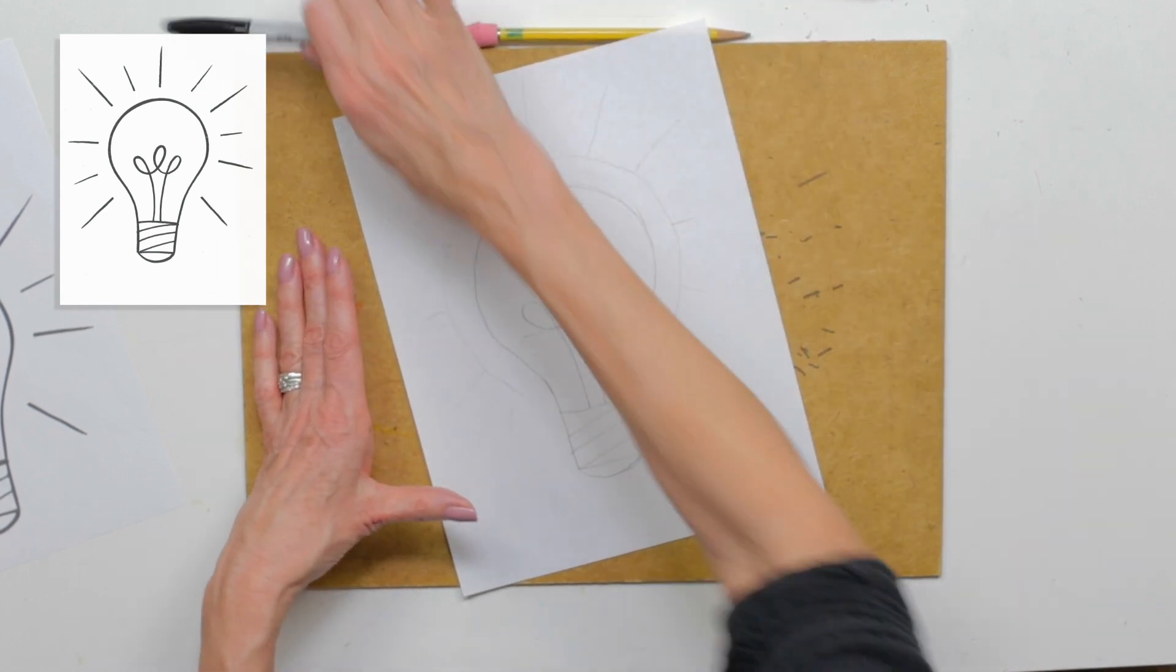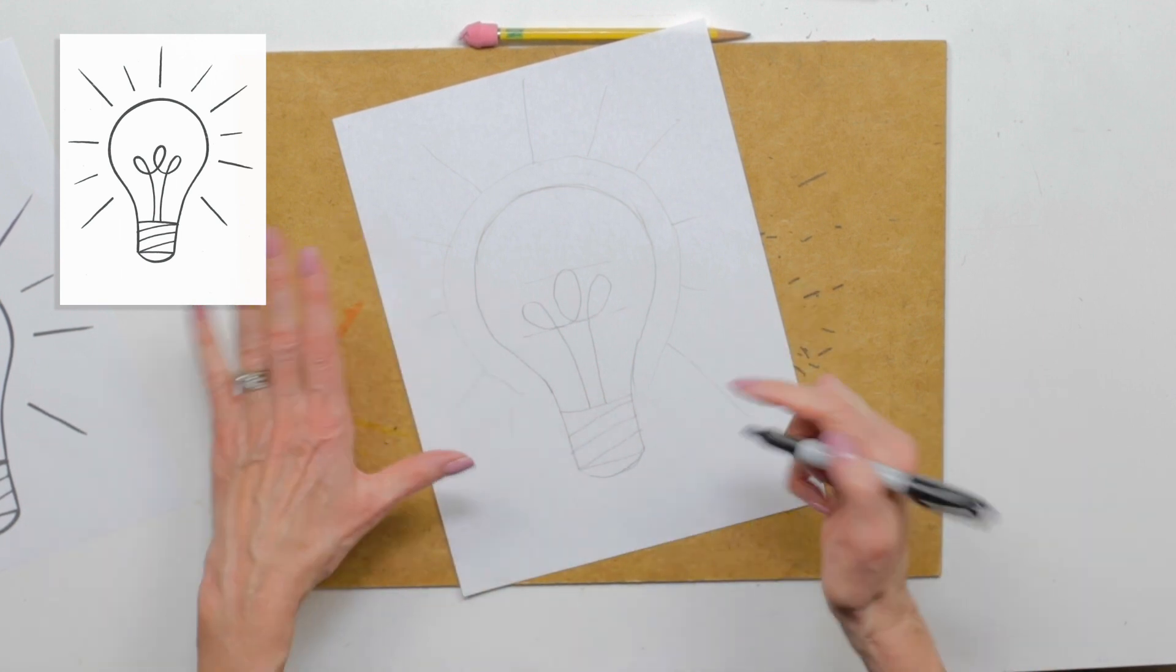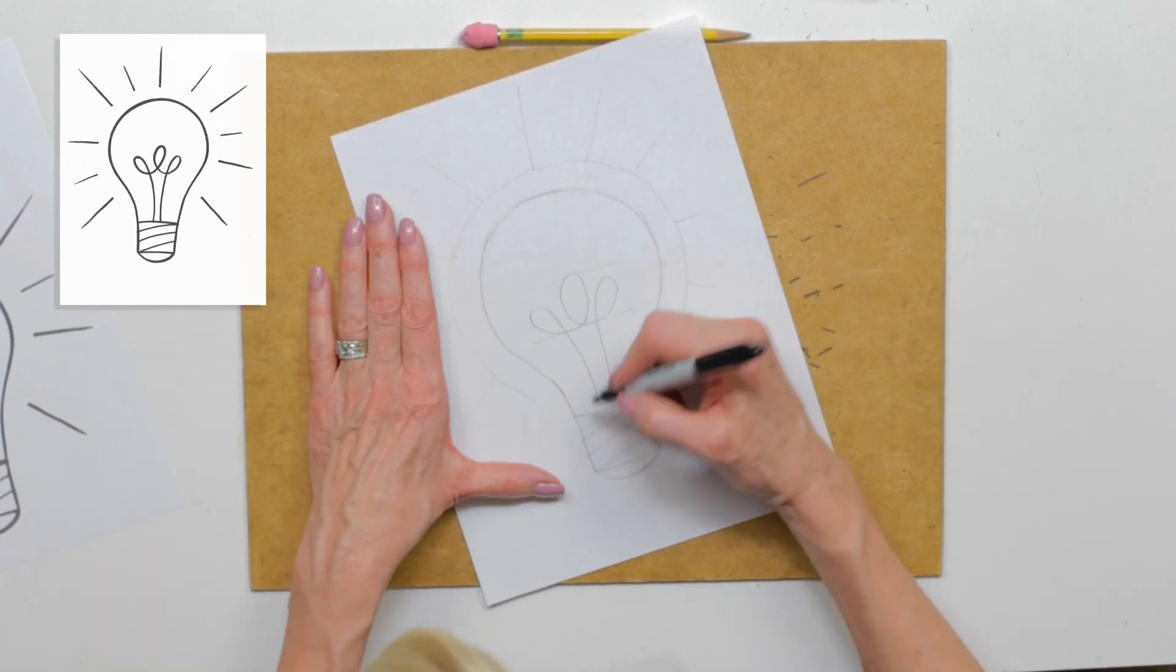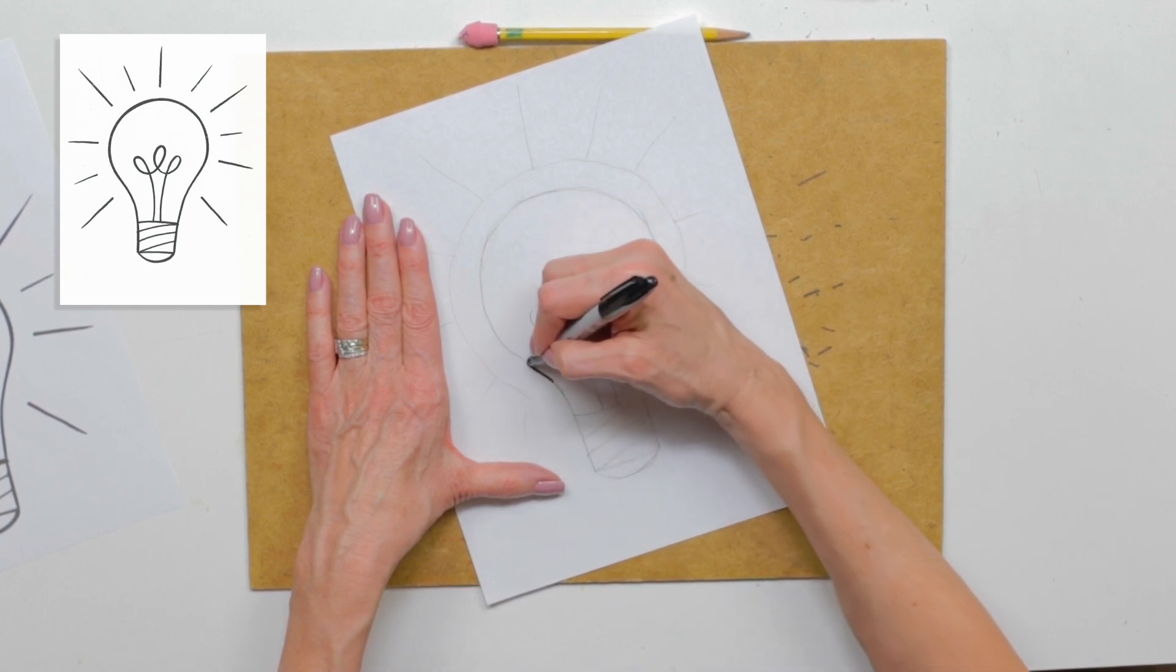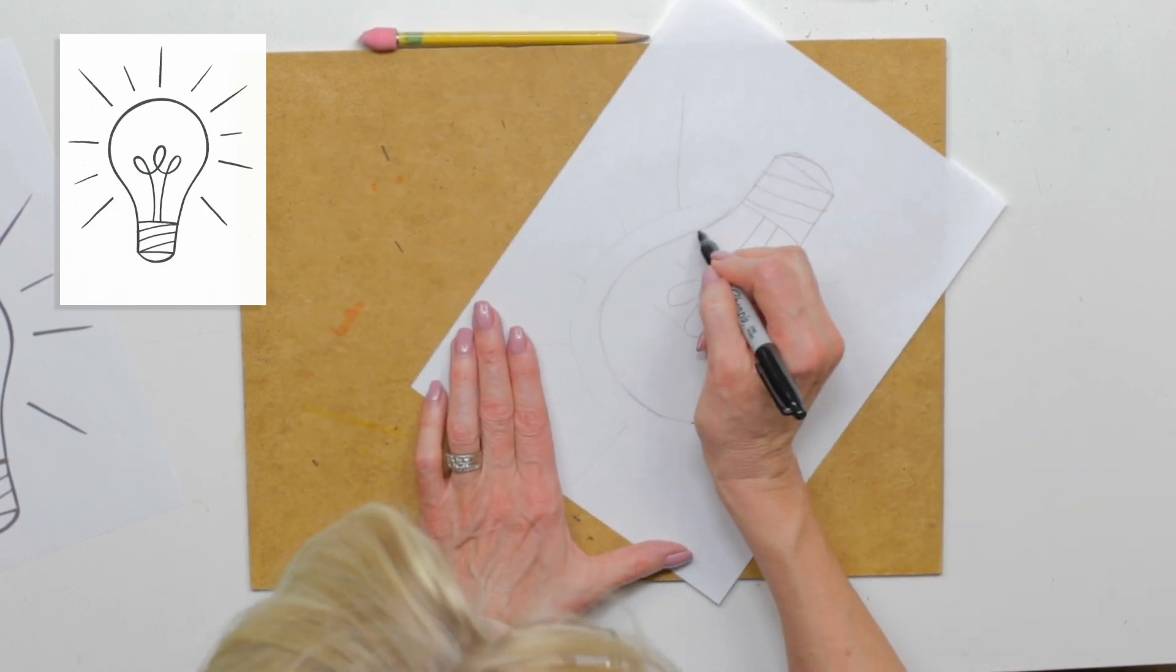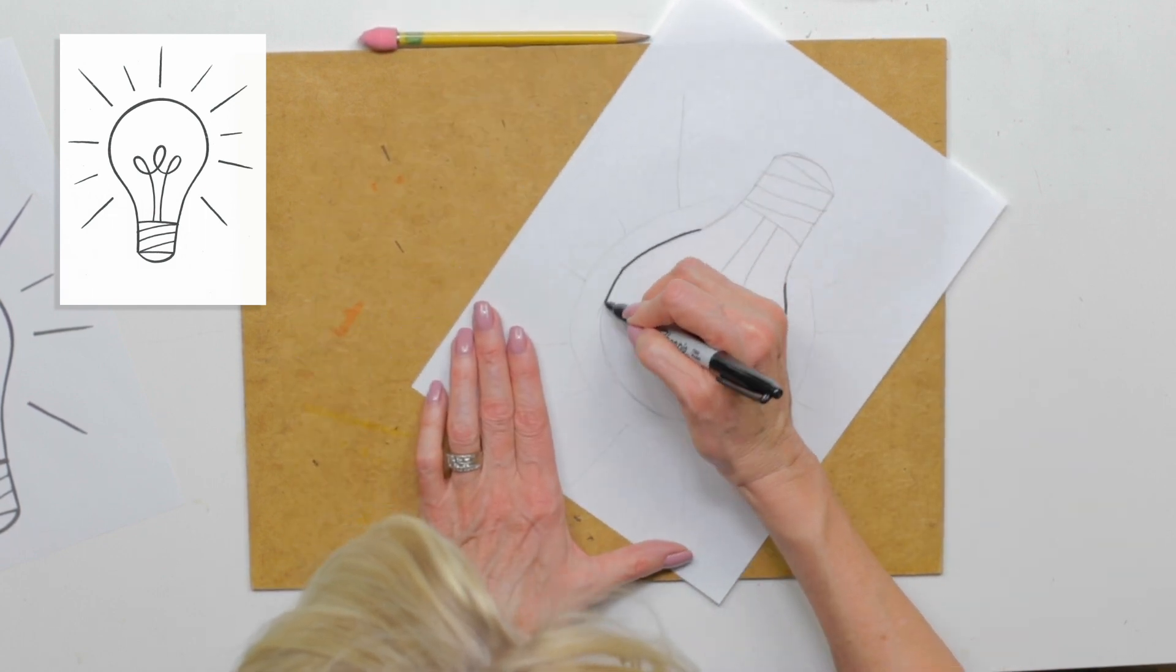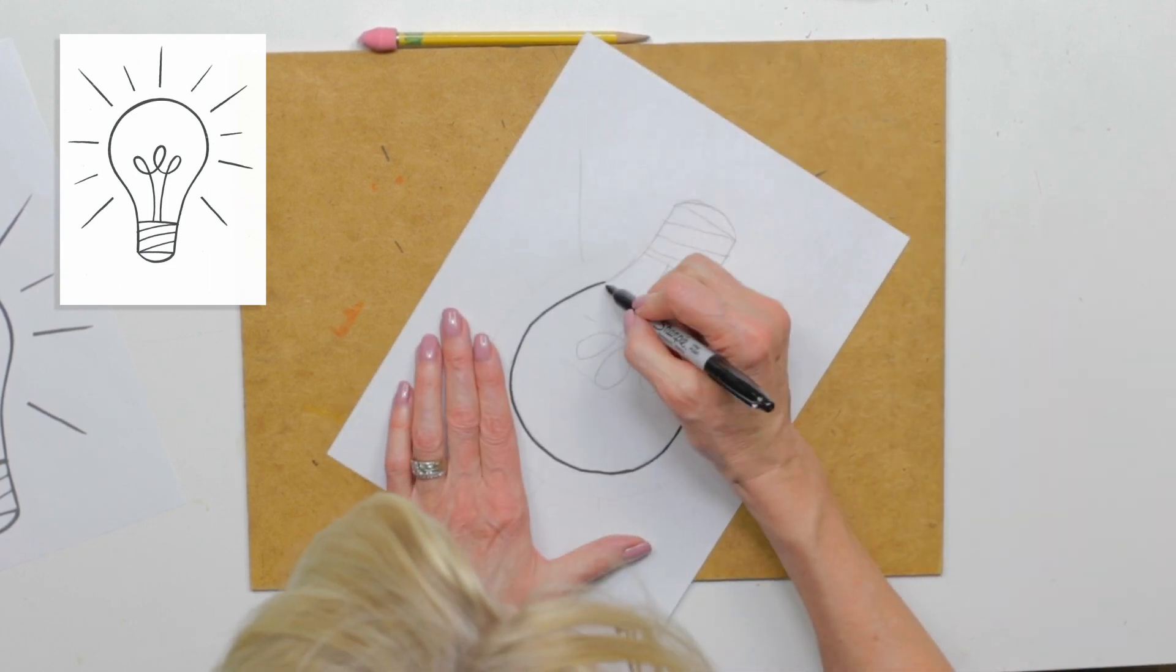Now let's trace it in Sharpie and then we'll erase our guidelines. Let me straighten out my bulb here. Always turn your paper when you're doing a curved piece - it's easier for your hand to go.